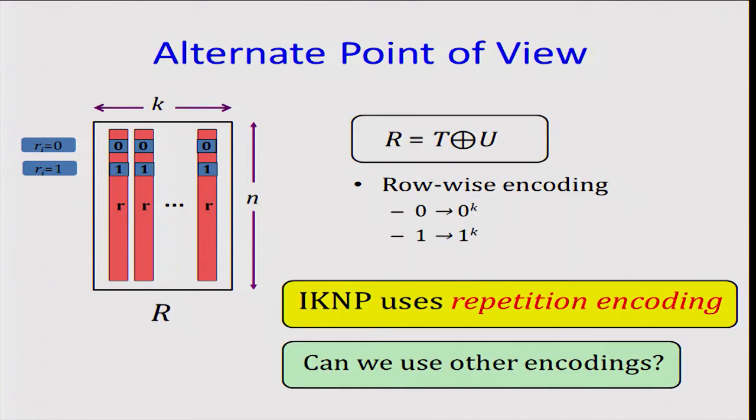If we switch to the dual view, we see that the ith row zero of capital R contains K copies of RI. So this means there's a row-wise encoding going on. Particularly, zero maps to zero to the K, and one maps to one to the K. We see that the efficient protocol of IKNP at some basic level is using row-wise repetition encoding.